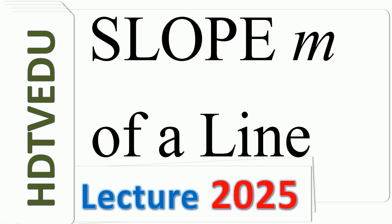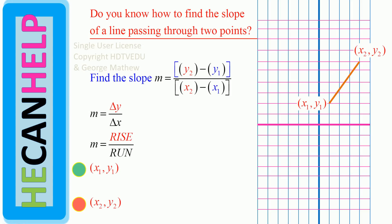Slope m of a line — lecture 2025. So where are we headed with this lecture? Given two points, can you plot those points, join those points, and then interpret the slope of the line? So that's where we are headed with this.